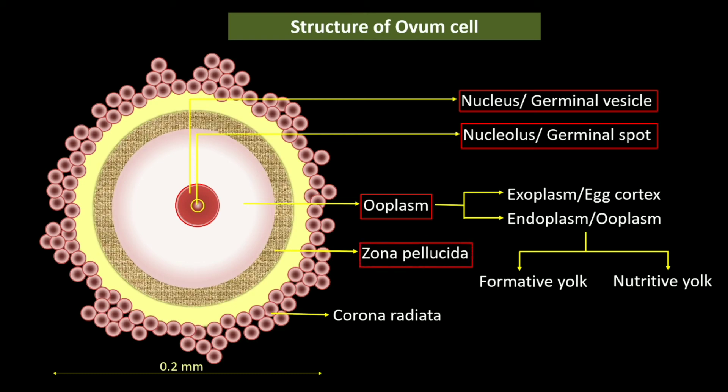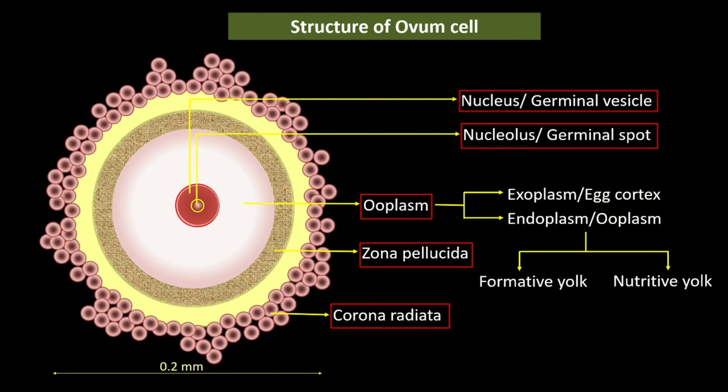The zona pellucida covers the ovum and serves the function of protection during the early stages of its development. The outermost layer is the corona radiata, which is made up of two or three layers of cells derived from the follicles. These cells adhere to the outer surface of the zona pellucida when the ovum is released from the follicles.